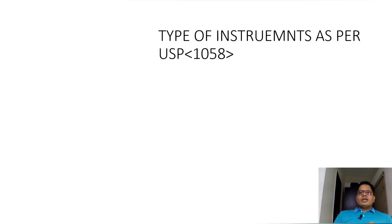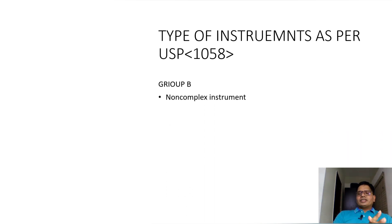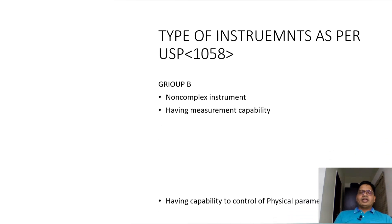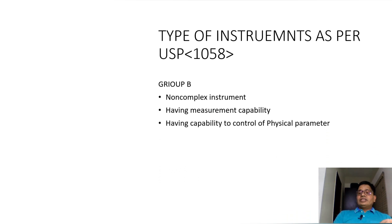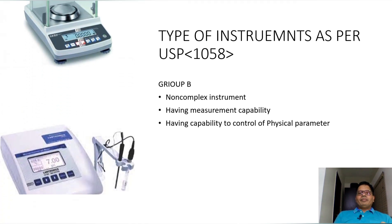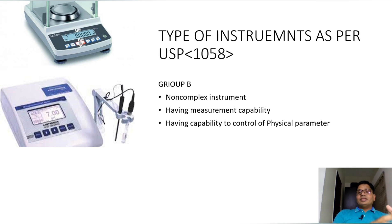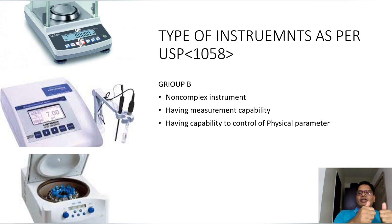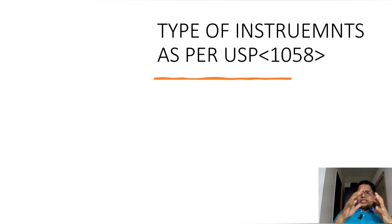As per USP 1058, the second group is Group B instruments — non-complex, simple instruments that have measurement capability. They can measure data, and they have the capability to control physical parameters such as temperature, pressure, and humidity. Examples include a balance and a pH meter — these are not attached with a computer, but they have the capability of measurement, so they come under Group B instruments.